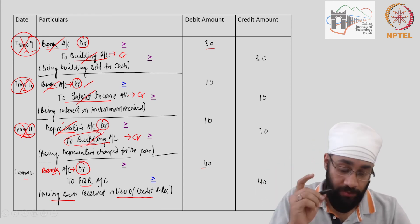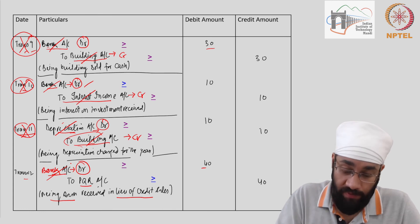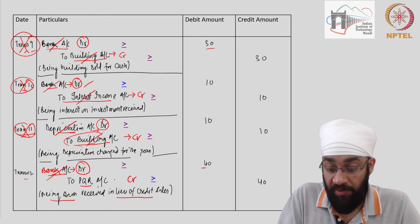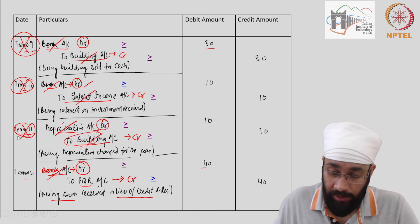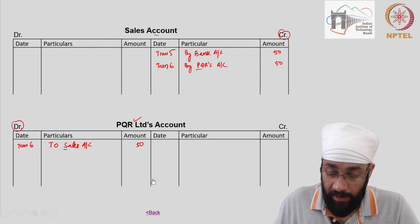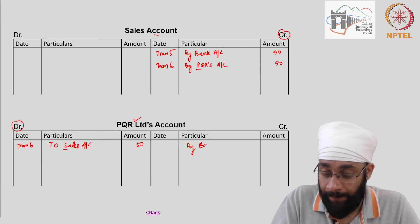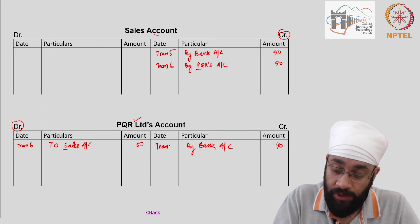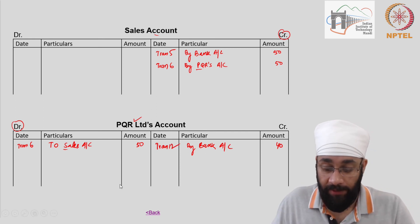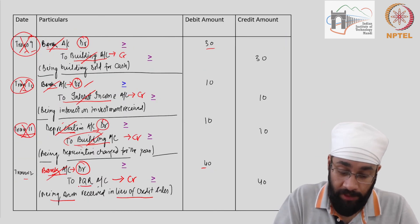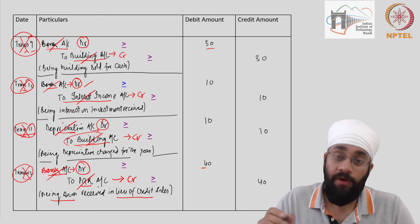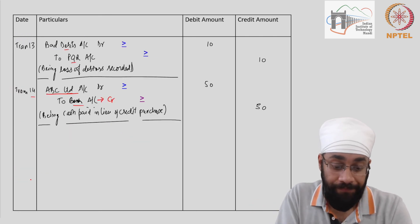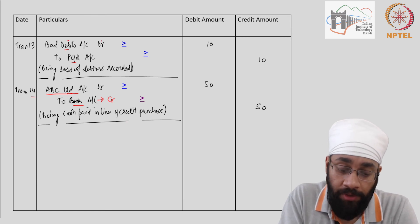Transaction 12: Bank account debit — taken care of. PQR account is being credited, so we go to the credit side of PQR and write 'By Bank, 40'. We go to PQR and write 'By Bank Account, 40', transaction 12. Done. The entry has been posted in PQR account; bank account was already done. Crossing it off — transaction 12 is done.